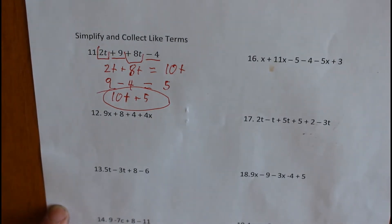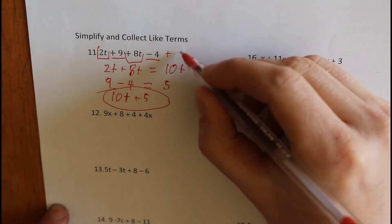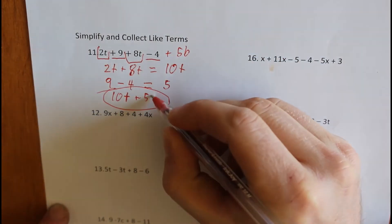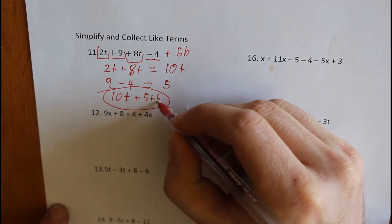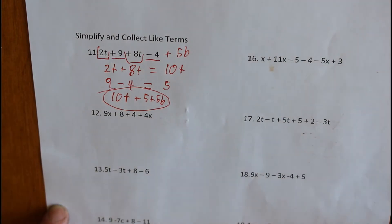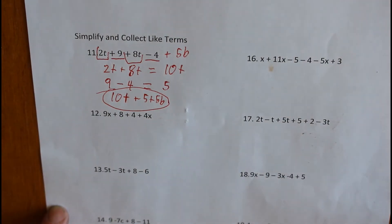So you're finding all the like terms. If there's an extra like term — let's say for example there's a plus 5b — well you just add plus 5b. It's its own term, it's totally different from all the rest.